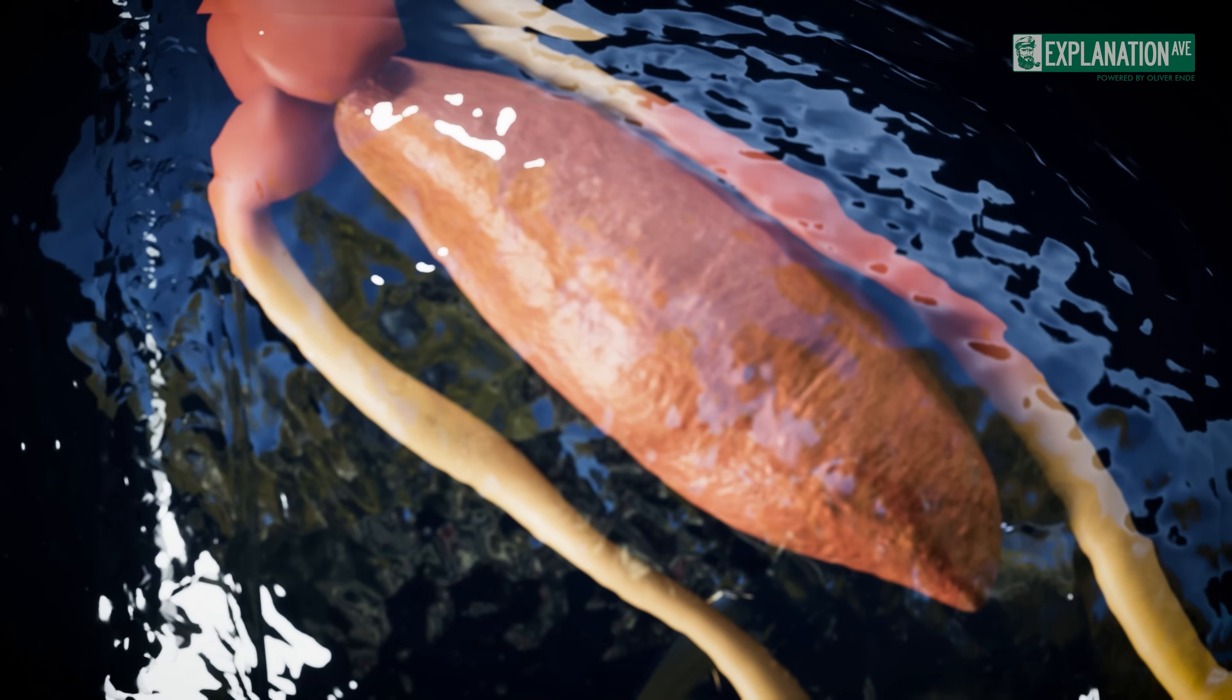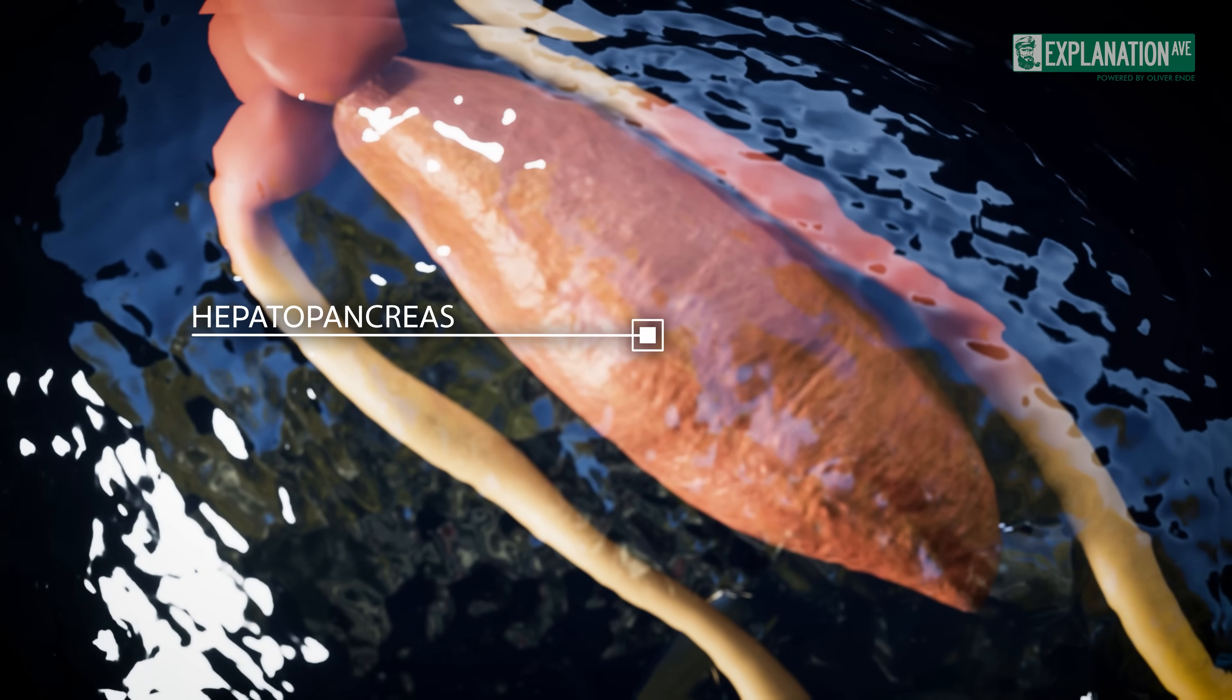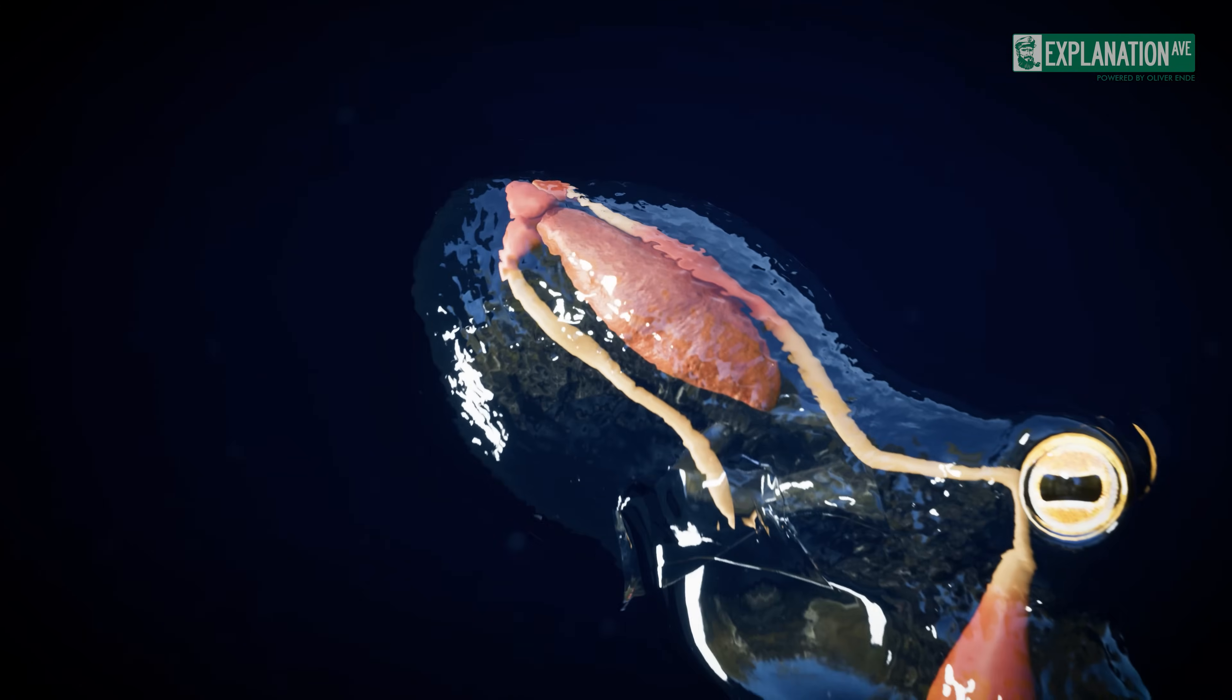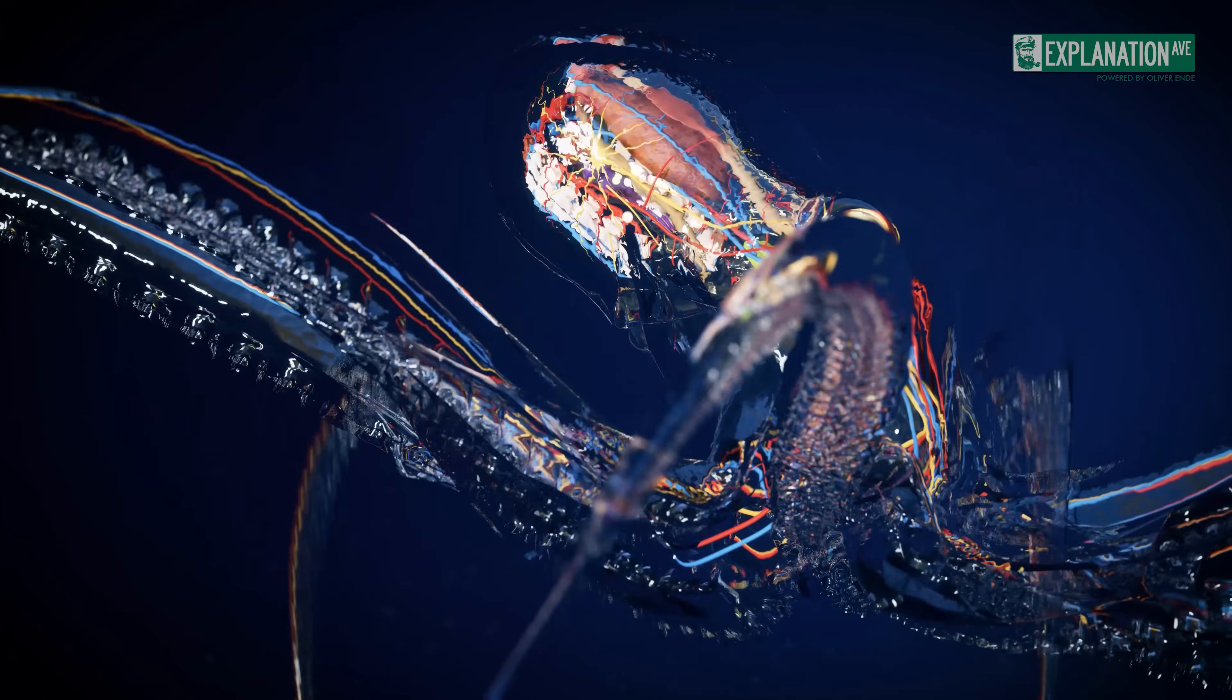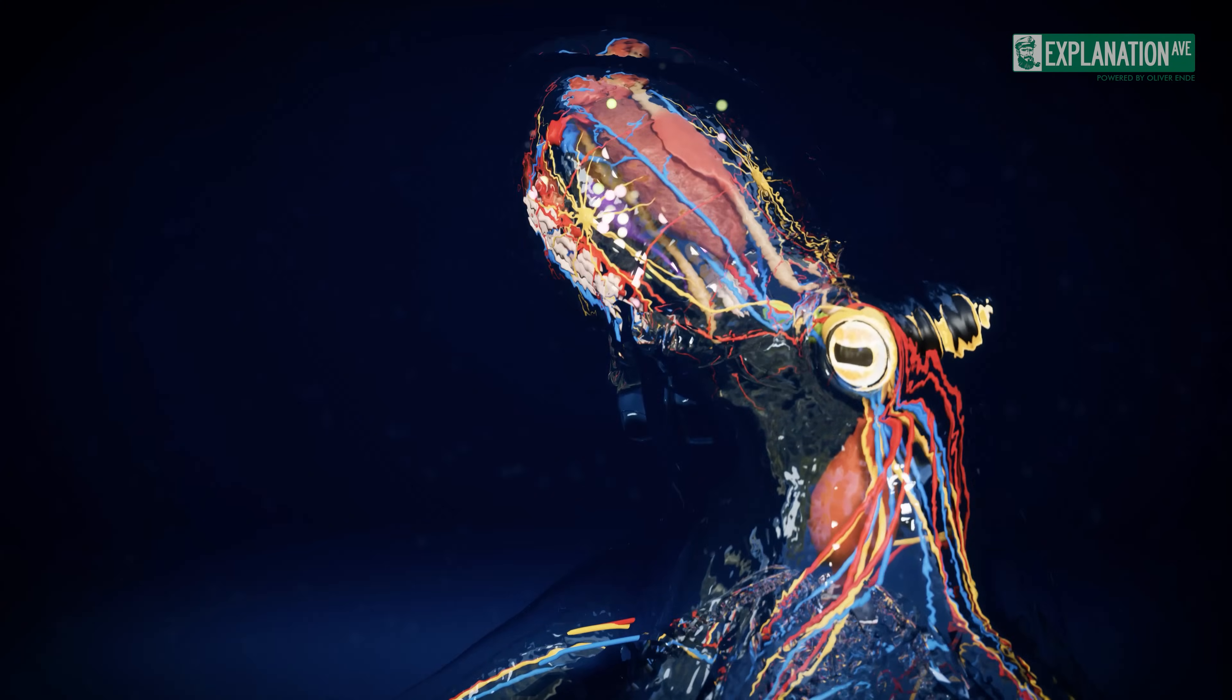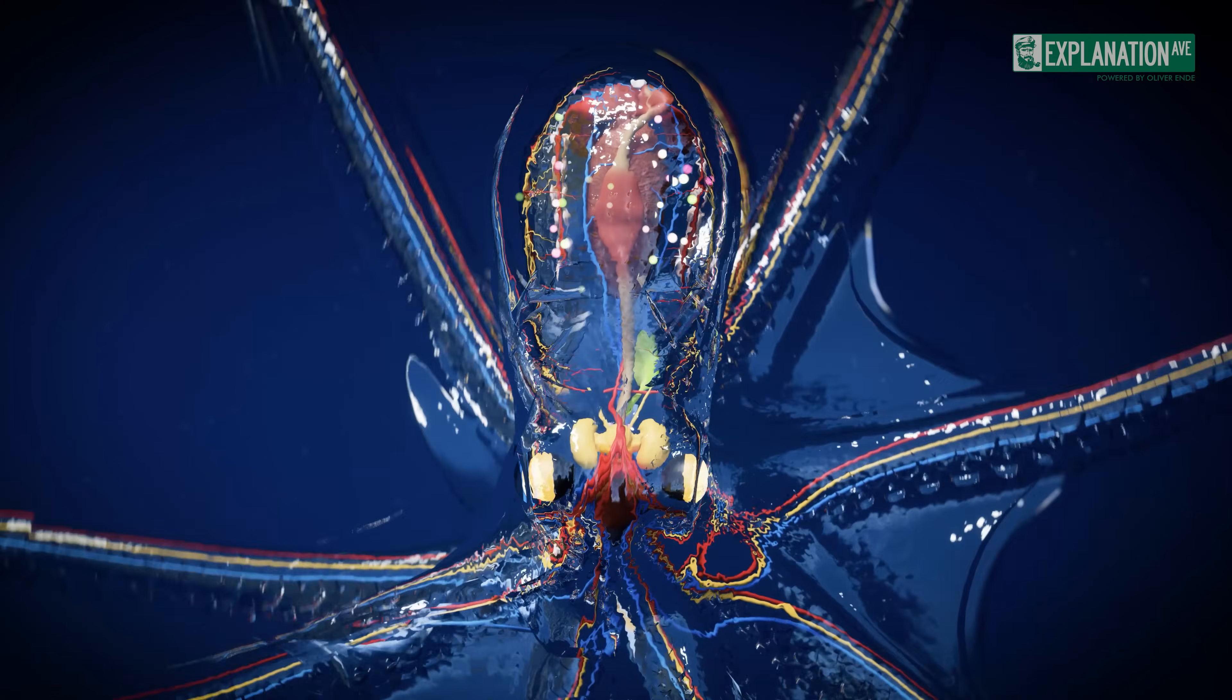However, the actual peak of digestion takes place in the so-called hepatopancreas, or digestive gland, also known as the octopus liver. This gland is capable of producing a variety of enzymes that break down the nutrients in the ingested food into their components, which are then transported via the octopus's blood system to the various tissues and organs, where they are used to produce energy or to build new cells.